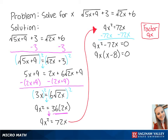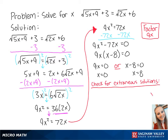Now we have 9x equal to 0, and we also have x minus 8 equals 0. For the first equation, if we divide both sides by 9, we get x equals 0. For the second equation, if we add 8 to both sides, we get x equals 8. Now we have to check for extraneous solutions.